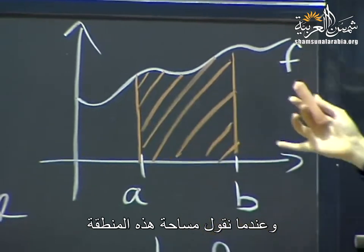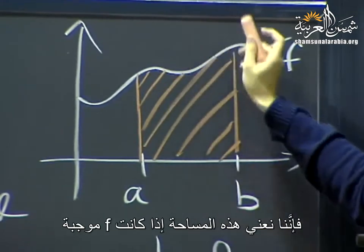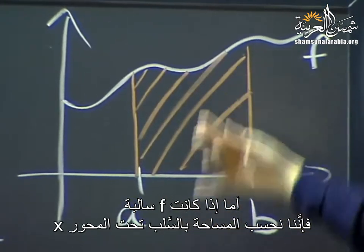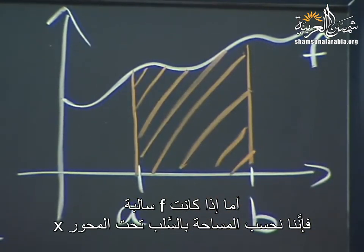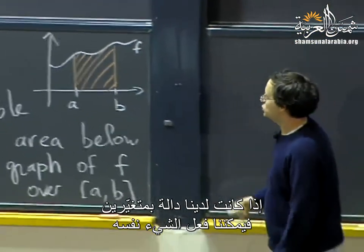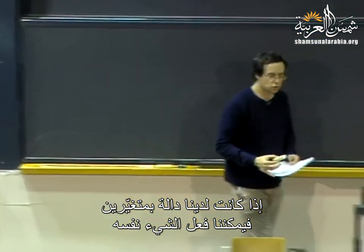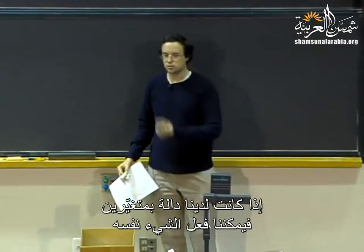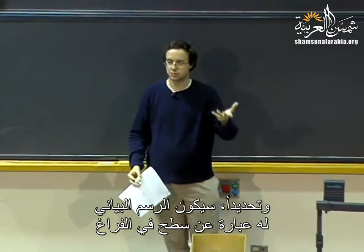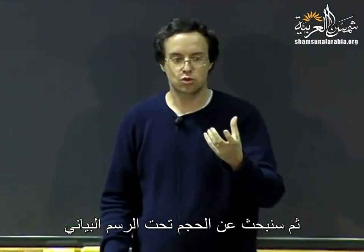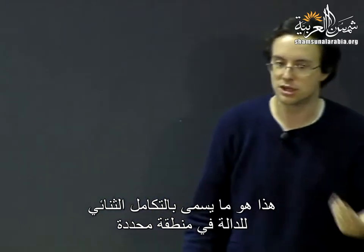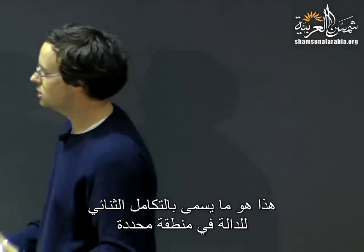When we say the area of this region, if f is positive, that's what happens. If f is negative, we count negatively the area below the x-axis. Now when you have a function of two variables, you can try to do the same thing — plot its graph. The graph will be a surface in space, and we can try to look for the volume below the graph. That's what we will call the double integral of a function over a certain region.